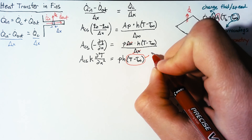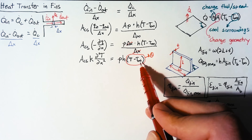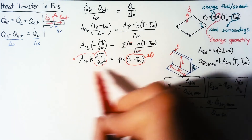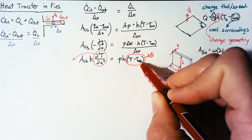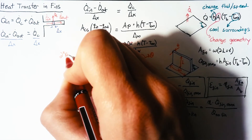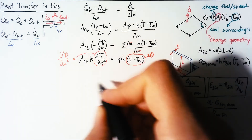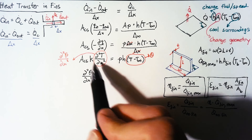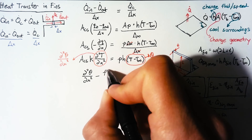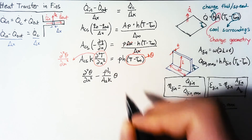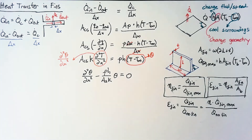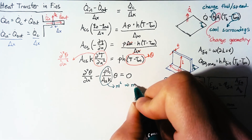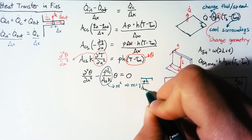To simplify notation, we define a new variable theta as the difference between the local temperature and the surrounding temperature. With this, d²T/dx² becomes d²θ/dx² since the second derivative of a constant is zero. Rearranging and dividing through by A_cs × k, we get d²θ/dx² minus (Ph)/(A_cs × k) × θ = 0. We call that coefficient m², so m = √(Ph / (A_cs × k)).